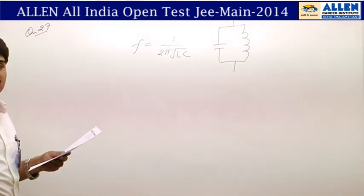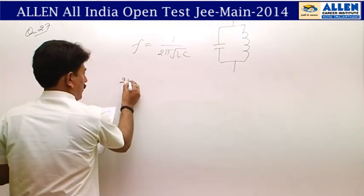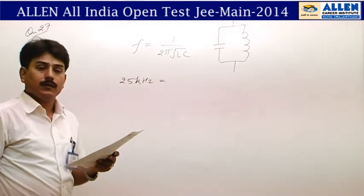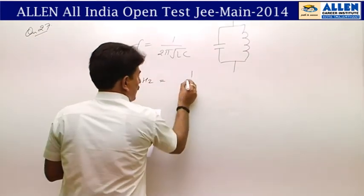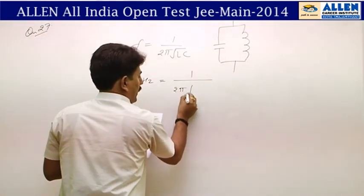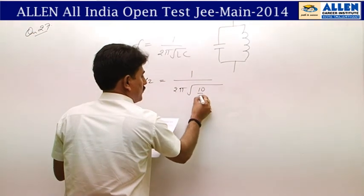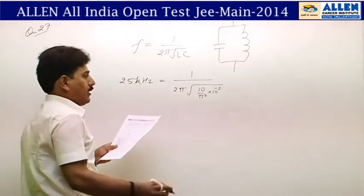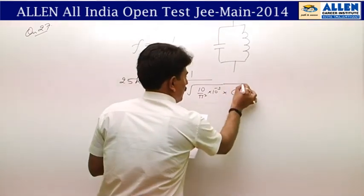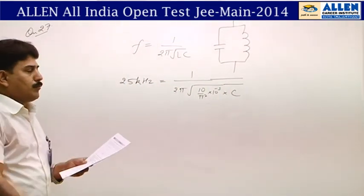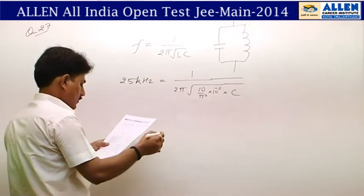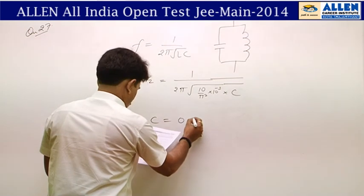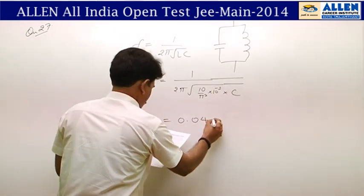In this question, frequency f = 25 kHz is given and inductance L = 10/π² × 10⁻³ H. Using f = 1/(2π√LC) and substituting these values, solving for C gives C = 0.04 microfarad.